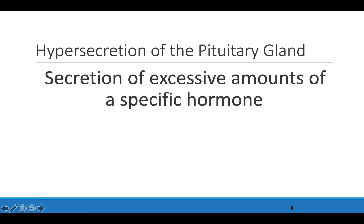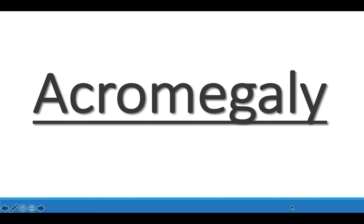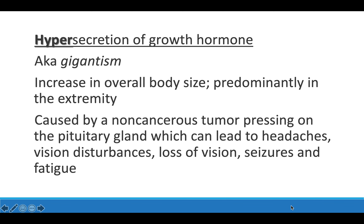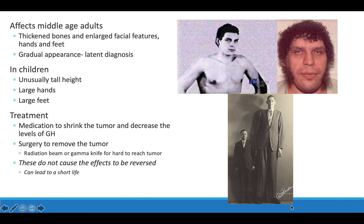Hyposecretion is when not enough hormone is being secreted. One condition caused by hypersecretion of the pituitary gland is called acromegaly. This is when you have hypersecretion of the growth hormone, also called gigantism, where different extremities of your body have an abnormal size, or your entire body can exhibit this as well. What happens is a non-cancerous tumor grows right next to the pituitary gland and presses on it, causing headaches, vision problems, seizures, and overwhelming exhaustion. This can be seen in both adults and children.